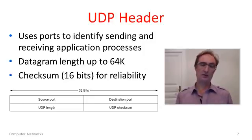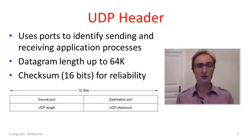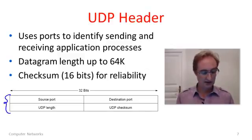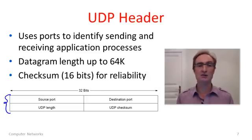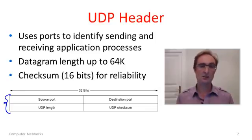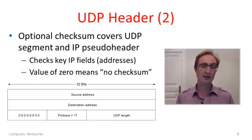There's not much more to look at for UDP. The header is very simple: it has 16-bit source and destination ports identifying the sending and receiving application processes, a length field allowing datagrams of up to 64 kilobytes, and a 16-bit internet checksum for a little added reliability. This is pretty much IP with minimal additions.